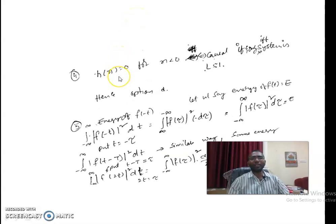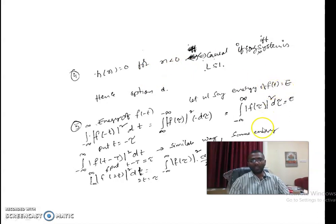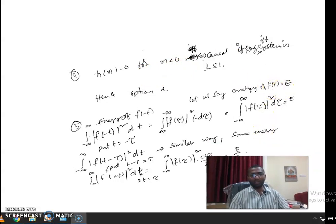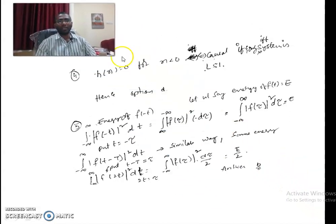The next question states h(n) = 0 for n < 0 and asks whether the system is causal. A system is causal based on this condition if and only if it is an LSI system. Since the question gives no information about whether the system is LSI, we cannot definitively say it is causal. Hence the answer is D: none of the above.